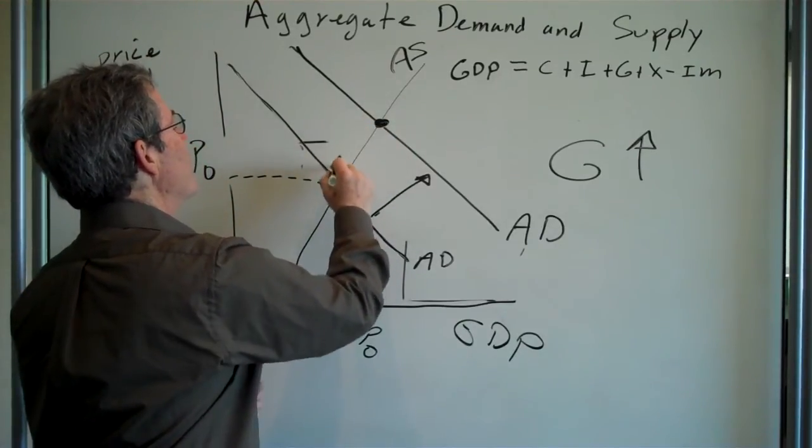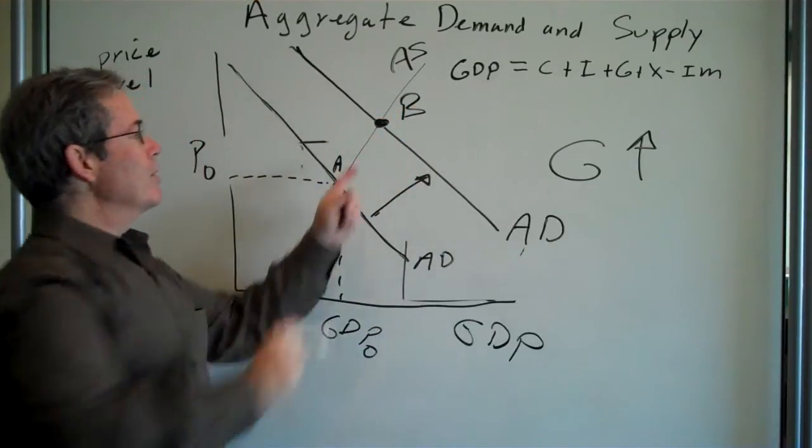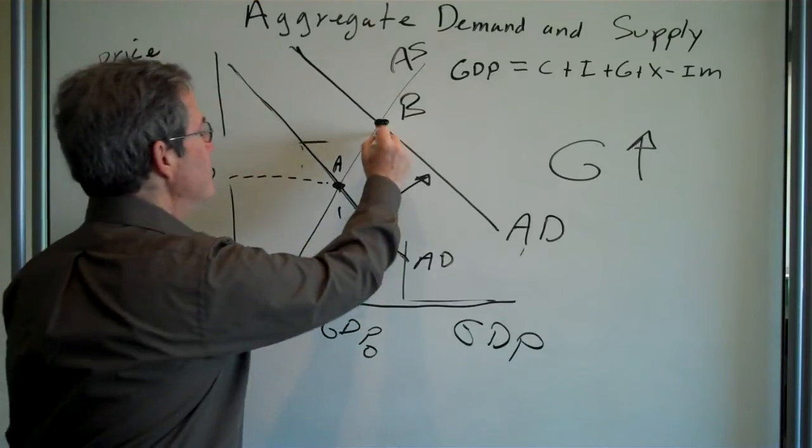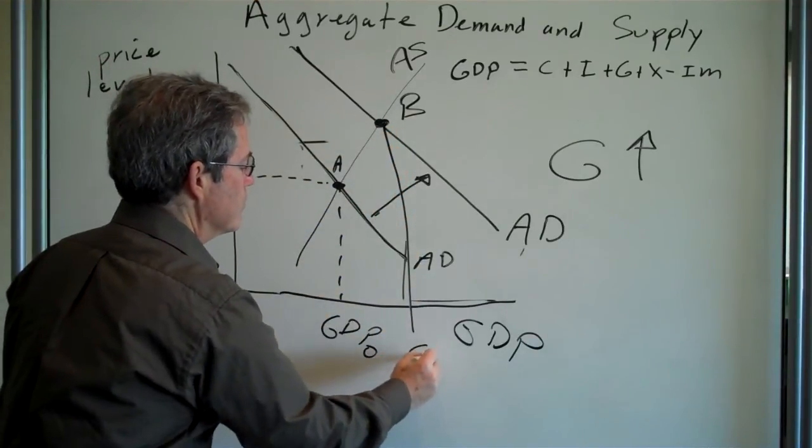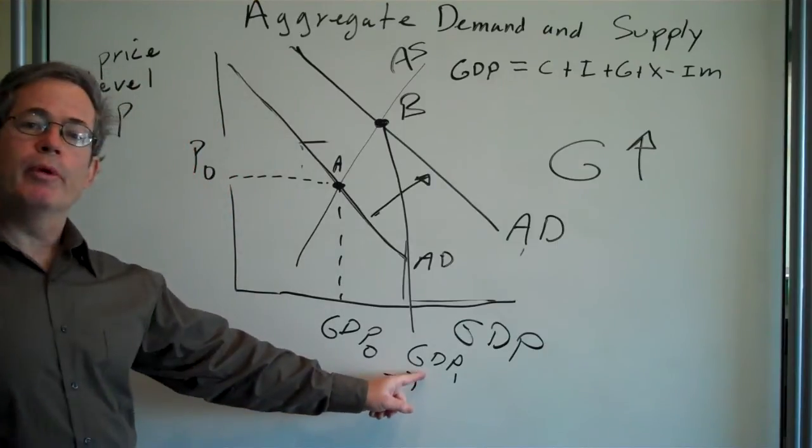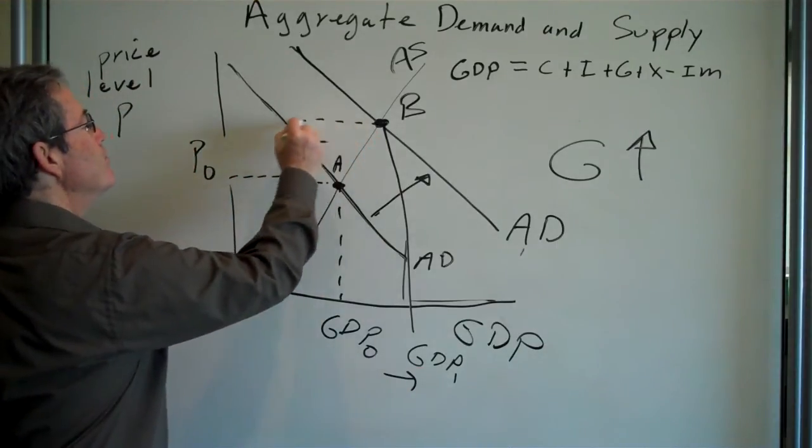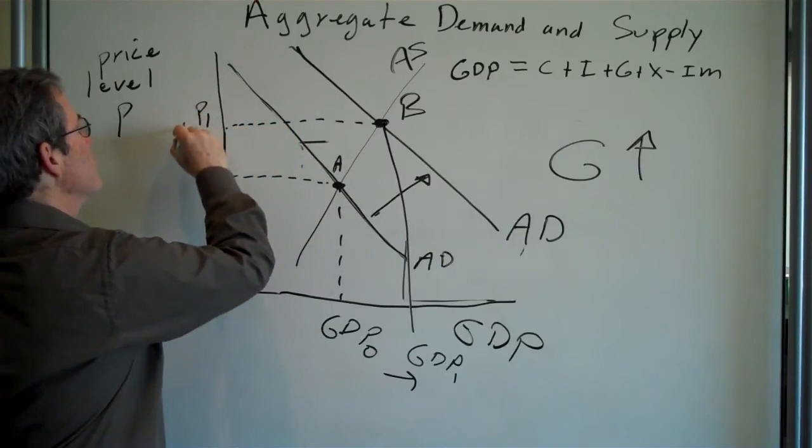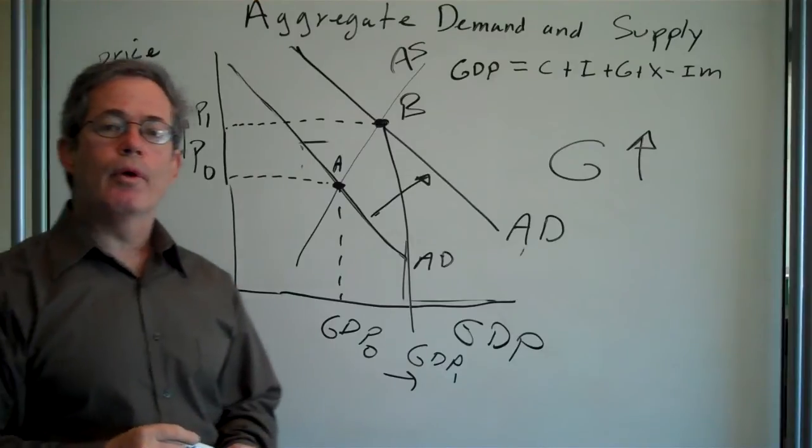Now, where will the new equilibrium be? Let's say we started off here. The new equilibrium will be here at point B. At point B, output will be higher, but prices will also go up.